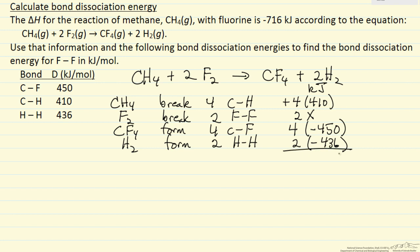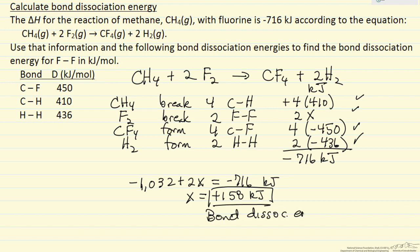And so if we add these numbers together, it's equal to minus 716 kilojoules. So we're going to add these 4 numbers together, we do that we get minus 1032 plus 2X, that's all equal to minus 716 kilojoules, which means X is equal to plus 158 kilojoules. So this is the bond dissociation energy for fluorine.